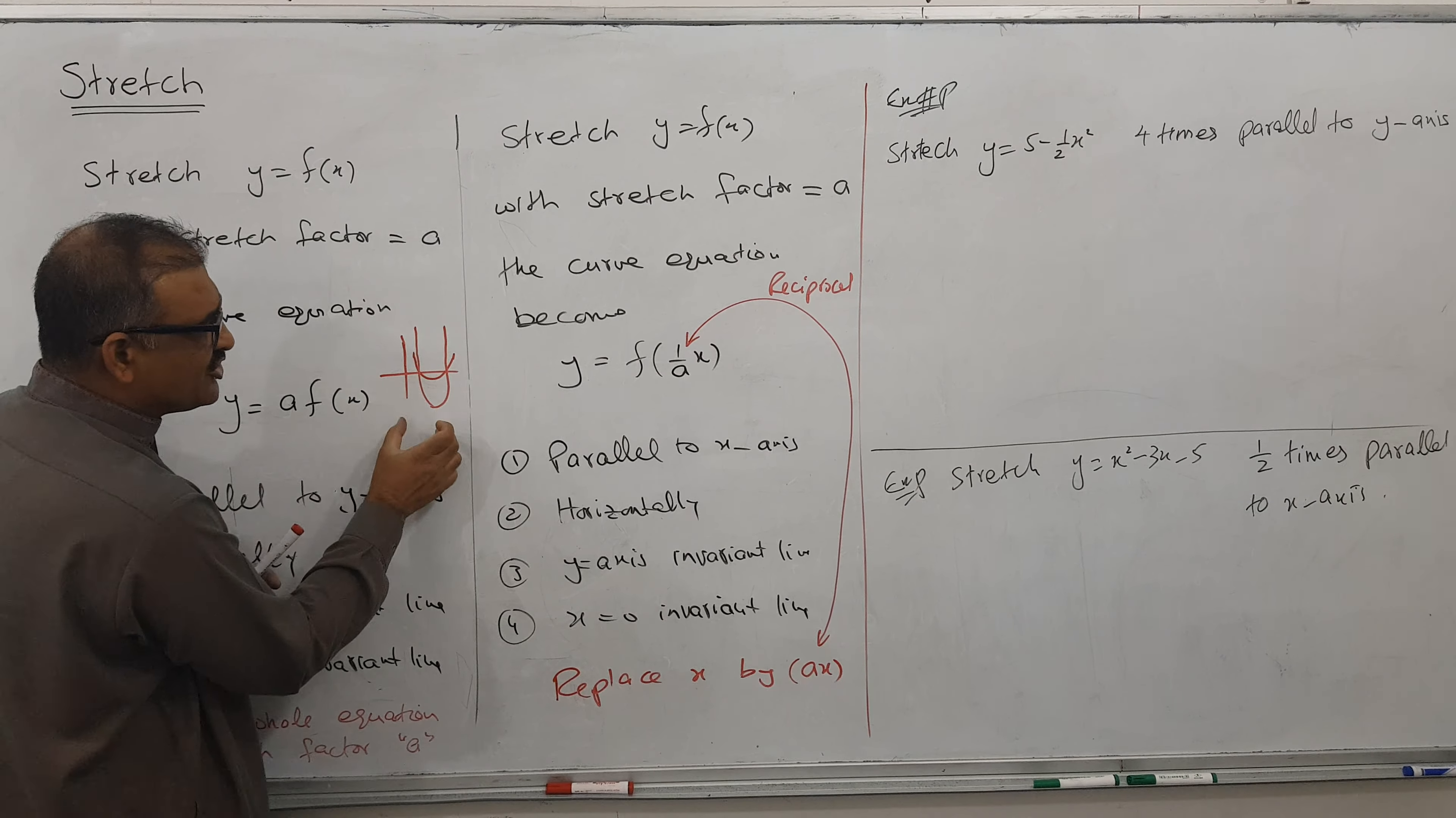When stretching four times, so what happens? This answer would be like this. So let's say this is 2. So 4×2 = 8. It will go to 8. This height is 8 because four times. So this is called parallel to y-axis. And x values are not changing at all. You can see that x-axis is invariant. Invariant means not changing, no change.